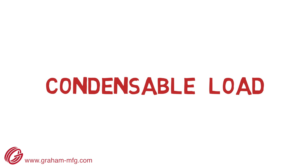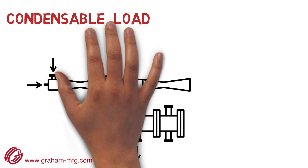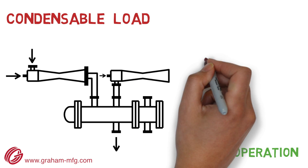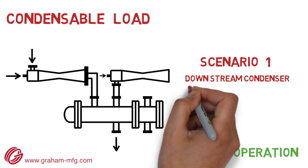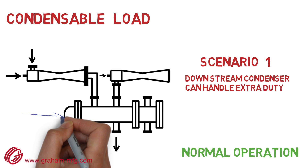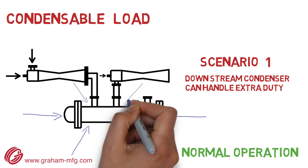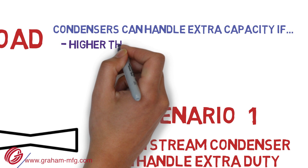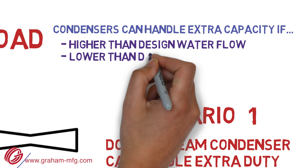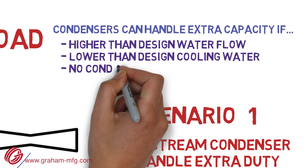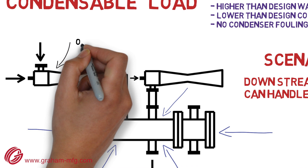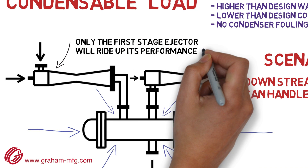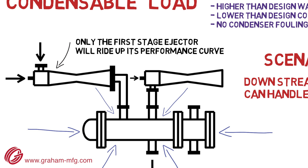Let's consider the condensable load. When condensable load is increased above design, there are two different scenarios that can occur in a multi-stage system. In the first scenario, the downstream condenser can handle the extra duty without causing the ejector's back pressure to increase above design. Reasons it can handle the extra duty include higher-than-design water flow, lower-than-design cooling water, and no condenser fouling. In this case, the increased condensable load will only cause the first-stage ejector to ride up its performance curve and the suction pressure to increase accordingly.